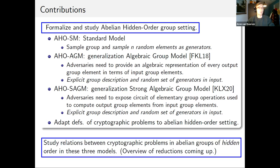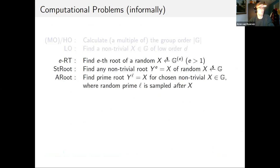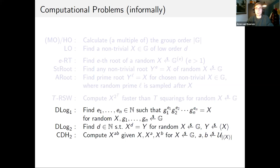The main part of our work is to study relations between cryptographic problems in abelian groups of hidden order in these three computational models. We studied various order problems of computing either the group order or finding some element of low order, various root problems where an adversary had to compute the root of either a self-chosen or random challenge element, the repeated squaring problem, and various generalizations of the discrete logarithm problem and computational Diffie-Hellman problem to abelian groups.